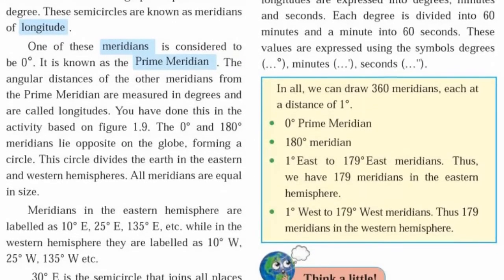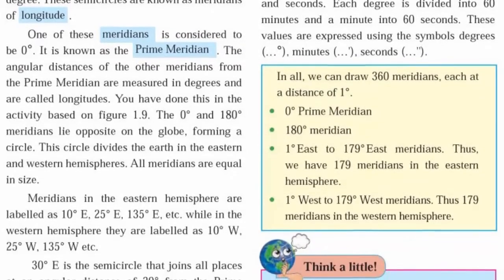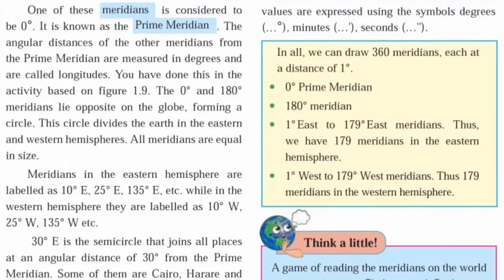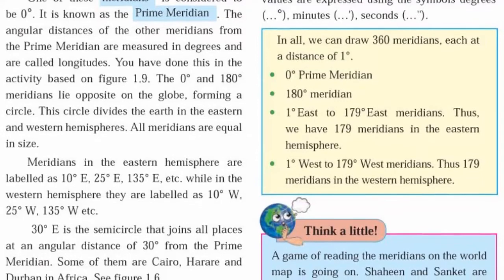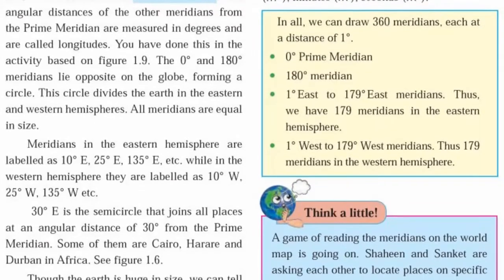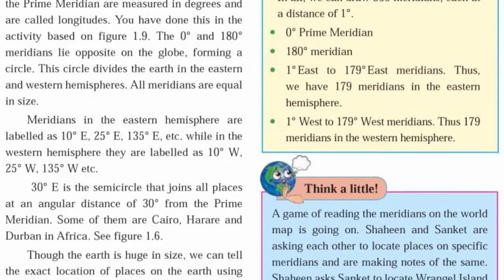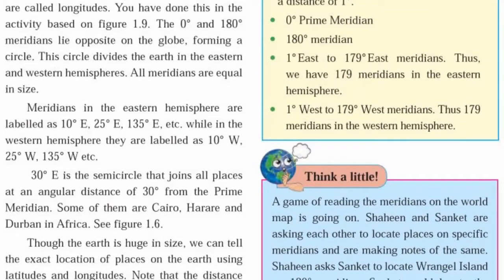Zero-degree meridian, 180 degree meridian, eastern hemisphere and western hemisphere. Zero-degree meridian is also known as the prime meridian. Zero-degree meridian and 180 degree meridian lie opposite on the globe forming a circle.